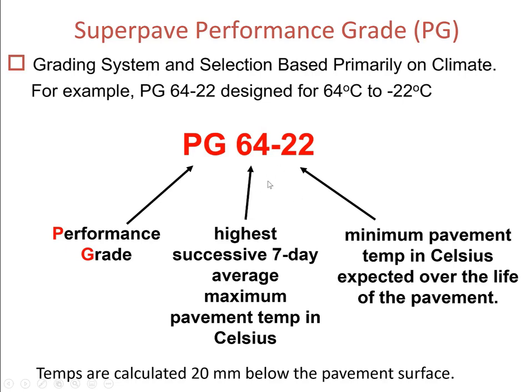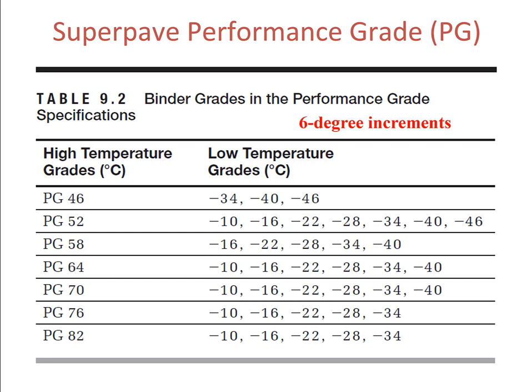This binder would meet the specifications for a design high temperature up to 64 degrees Celsius and a design low temperature warmer than negative 22 degrees Celsius. The temperatures are calculated about 20 millimeters below the pavement surface, and this temperature is related to the air temperature but also to some other factors. This table shows the binder grades in the performance grade specifications. The high temperatures range from 46 degrees Celsius to 82 degrees Celsius, with a six-degree increment between each two numbers, and the low temperatures correspond to each high temperature with the same six-degree increment.